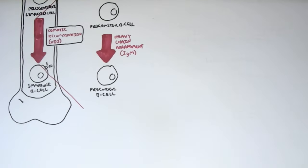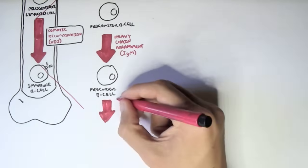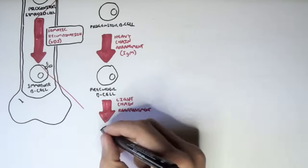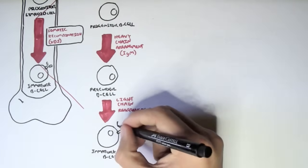And so this progenitor B cell will become a precursor B cell after somatic recombination of the heavy chain. When it becomes a precursor B cell, the precursor B cell will then undergo another somatic recombination, but this time of the light chain, so light chain rearrangement to become an immature B cell. So as you can see, there are two somatic recombinations occurring.